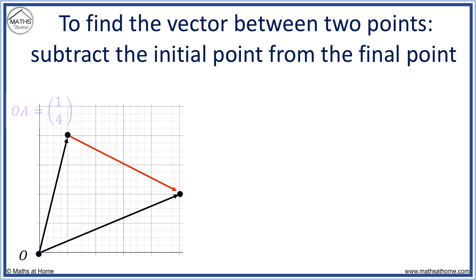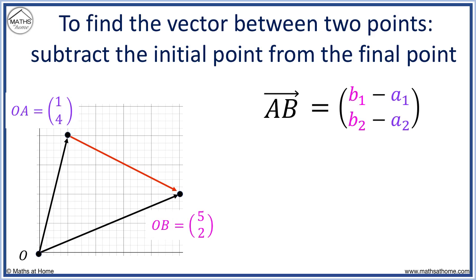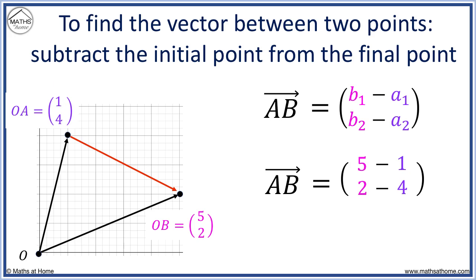Here is another example. Here OA is 1, 4 and OB is 5, 2. We have 5 minus 1 and 2 minus 4, giving 4 and minus 2. We can see that the red vector travels 4 in the x direction and minus 2 in the y direction.